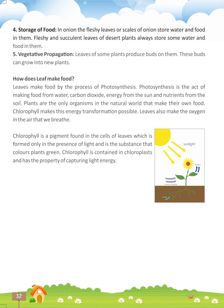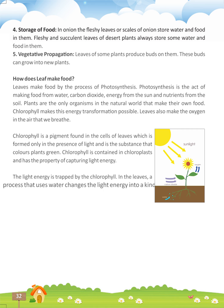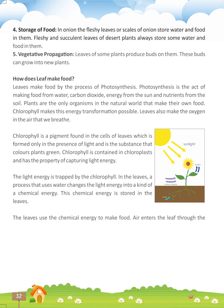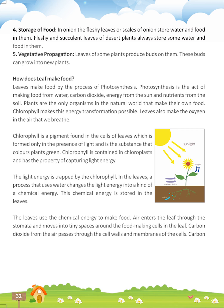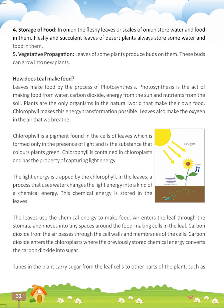Chlorophyll is contained in chloroplasts and has the property of capturing light energy. The light energy is trapped by the chlorophyll. In the leaves, a process that uses water changes the light energy into a kind of chemical energy. This chemical energy is stored in the leaves, which then use it to make food. Air enters the leaves through the stomata and moves into tiny spaces around the food-making cells. Carbon dioxide from the air passes through the cell walls and membranes of the cells, enters the chloroplasts, where the previously stored chemical energy converts the carbon dioxide into sugar. Tubes in the plant carry sugar from the leaf cells to other parts of the plant, such as roots, stems, and fruits. Cells in these parts store some of the sugar.